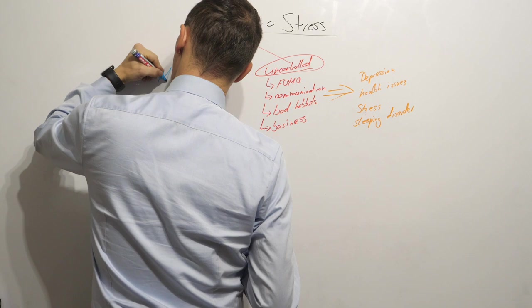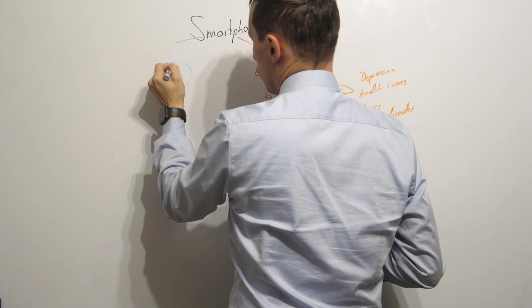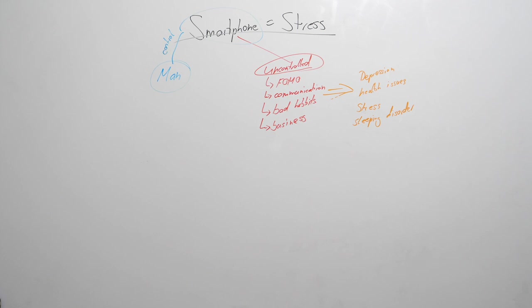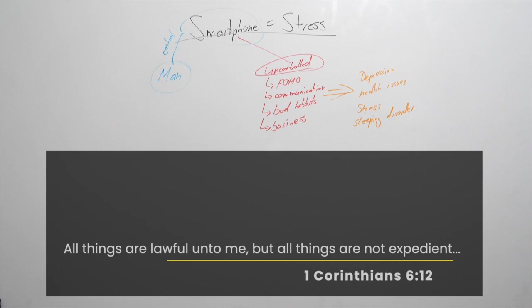On the other side we believe there is man, and we believe that man was made in the image of God. And God said you need to control everything. Now you turn your Bible to 1 Corinthians chapter 6. The Bible says in 1 Corinthians chapter 6 in verse 12, and that's the answer. Should you even have a smartphone? Well the question really has something to do with you.